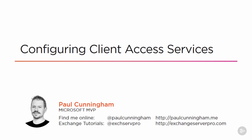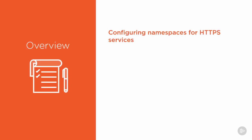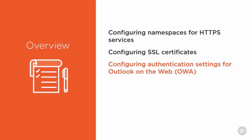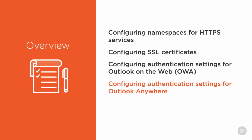Welcome back. It's time to start looking at configuring the client access services. In this module, we're going to look at configuring the namespaces for each of the HTTPS services on the Exchange server. We're also going to look at configuring the SSL certificates, configuring the authentication settings for Outlook on the Web — also known as OWA — Outlook Anywhere, and the Kerberos authentication settings.